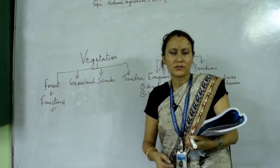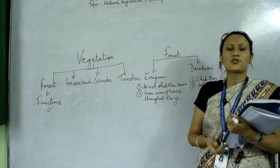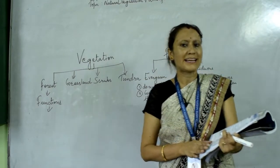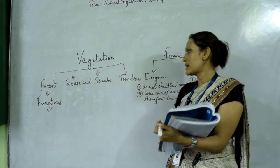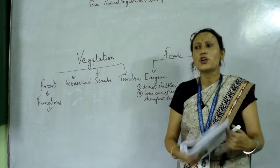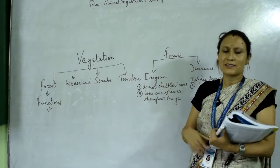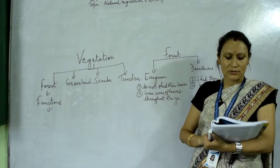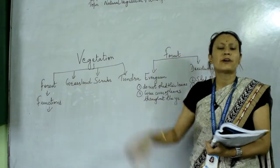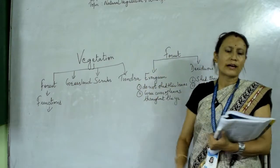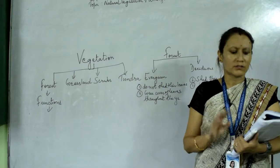Scrubs are plants specially found in desert areas — dry, arid areas — like thornish crops and small bushes. The last type is tundra vegetation, found in the tundra or polar areas where there is a very severely cold climate.